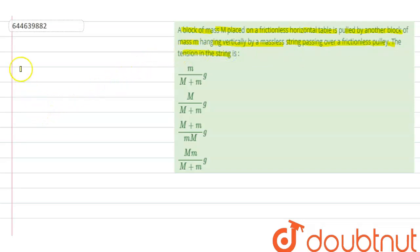So this question is based on the chapter laws of motion. In this question, they have given that there is a block of mass capital M that is on a frictionless surface and there is a block of mass small m which is tied to this. And we have to find the tension in the string.